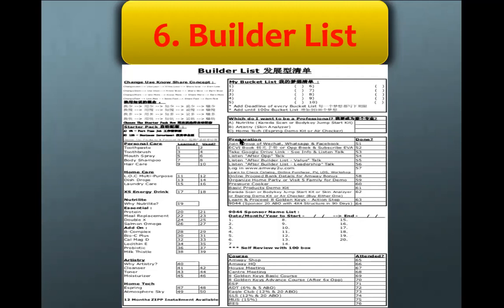The next box is Preparation. This Builder List is the business setup you go through before you go into the market. All of this is preparation — remember that choosing to be a builder doesn't mean you go into the market directly. You need to have the concepts, be trained, and learn first. The preparation covers tasks 51 to 64.